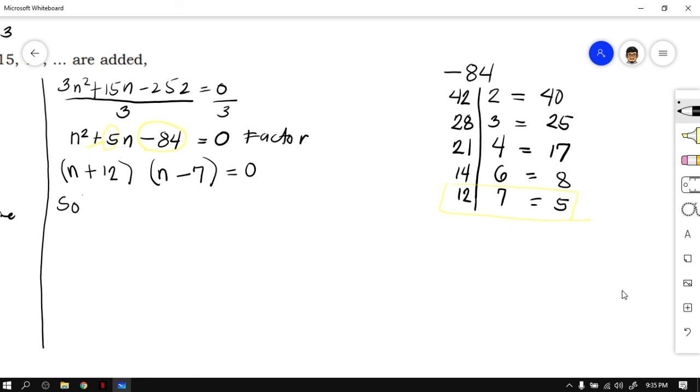Now let's solve for n. If n plus 12 is equal to 0, and n minus 7 is equal to 0. Just simply equate 12 to the other side, n is equal to negative 12. And n is equal to positive 7. Now remember that the domain of every sequence is always a non-negative number. That means every value of n is always positive. So which among the two values of n is acceptable? 7, because 7 is the positive one.